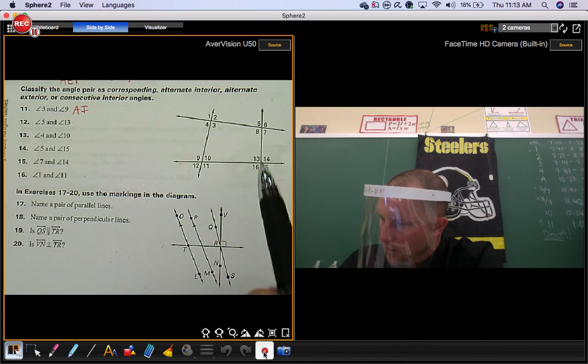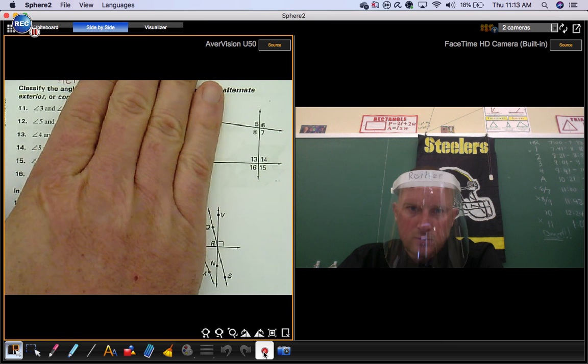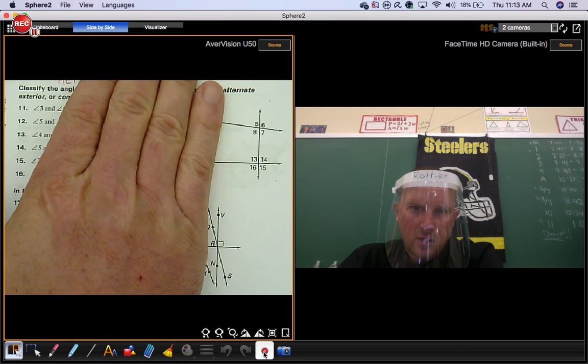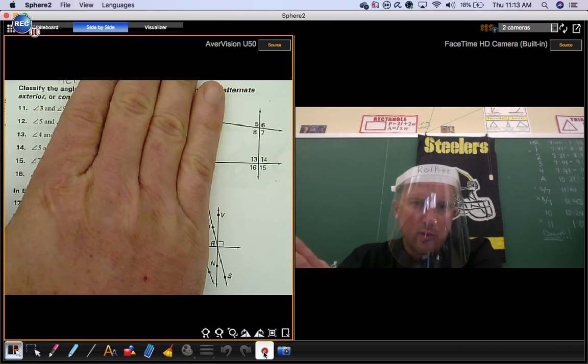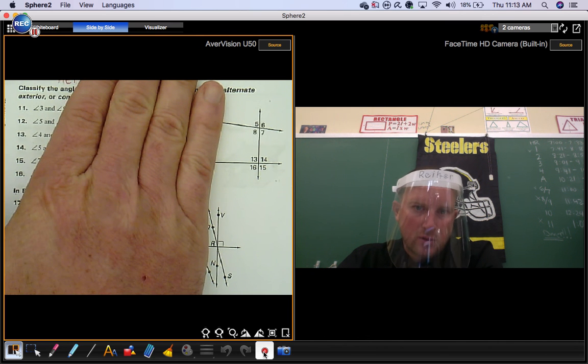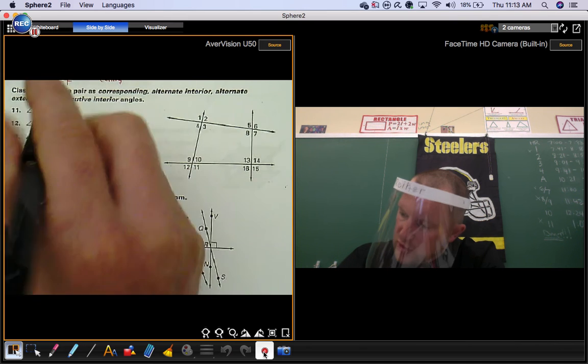Angle 5 and angle 13. I'm going to cover up that line. Angle 5 and angle 13 are both on the left of the transversal and they're in the same spot. These are corresponding angles.